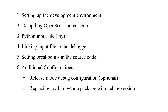Let's get started. These are all the basic steps involved in this debugging process. The first step involves setting up the development environment using Visual Studio. The second step is to compile the OpenSees source code. The third step involves getting the Python input file which we are going to use in this debugging process. The fourth step is linking that Python input file to the Visual Studio debugger, then setting some breakpoints in the source code, and then some additional configurations such as a release mode debug configuration and replacing the .pyd file in the Python package with the debug version.